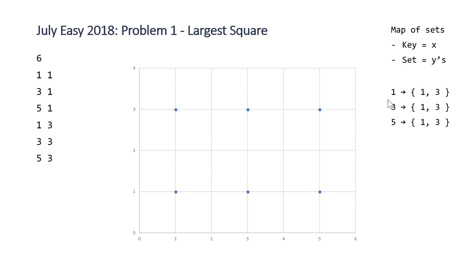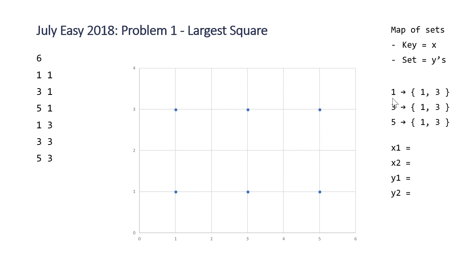So our x values are 1, 3, and 5, and then the set for each of these keys corresponds to the y values. What we're going to do is try to find all possible values for x1, x2, y1, and y2. These four values are going to combine to make our four points. We loop over each of our sets in our map, starting with the first key, which is 1, and set that key to be x1.